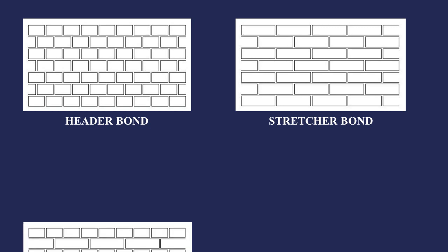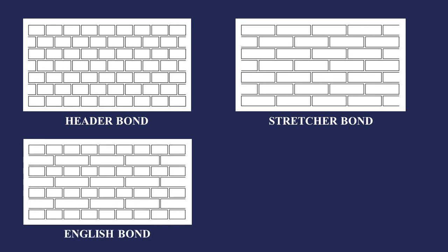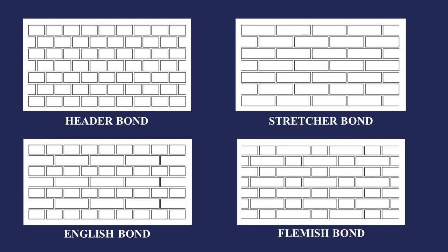In English Bond there are alternate courses of headers and stretchers. In Flemish Bond, headers and stretchers alternate within the same course.